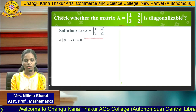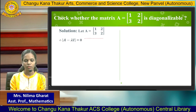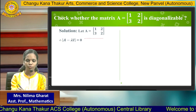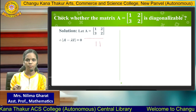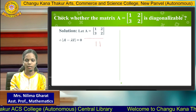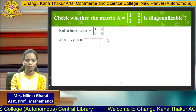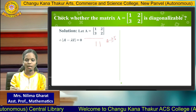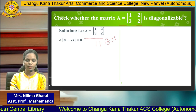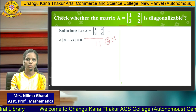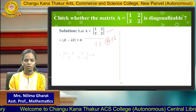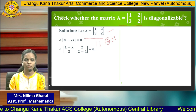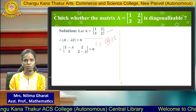The characteristic equation is: determinant of (A minus lambda I) equal to 0. A minus lambda I means we subtract lambda from the diagonal elements of A. Therefore the determinant of [[1-lambda, 2],[3, 2-lambda]] is equal to 0.